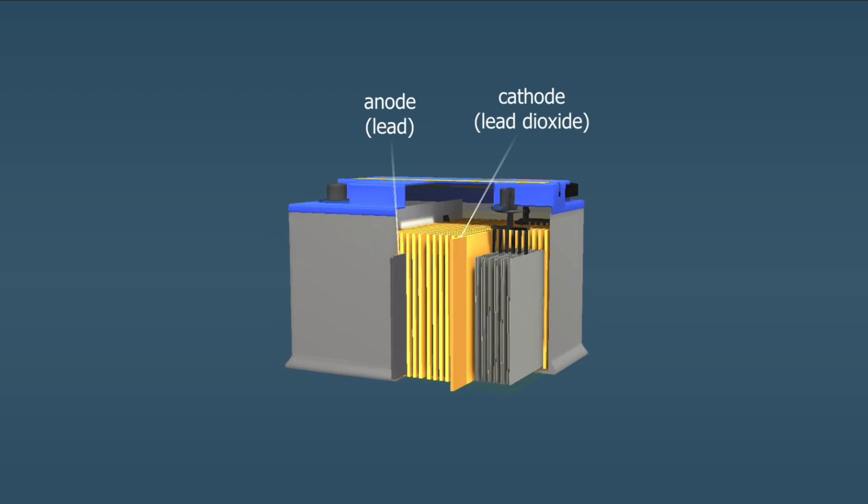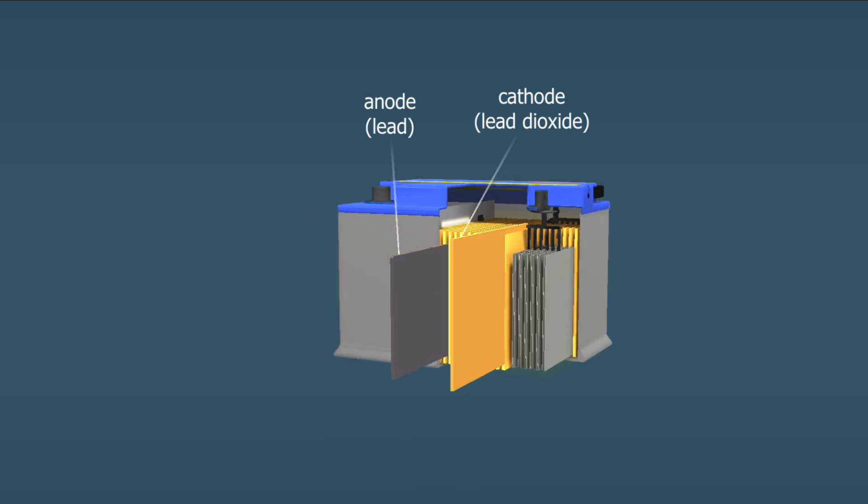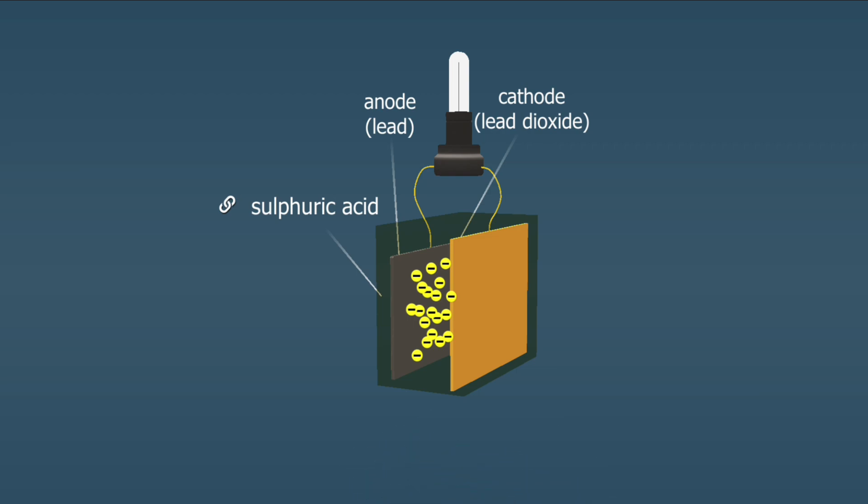In the lead-acid battery, there are two electrodes within a cell immersed in a solution of water and sulfuric acid.